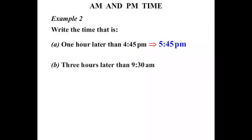What about three hours later than 9:30 AM? Well if we add three to 9:30, let's go up an hour at a time. So we start at 9:30, then we're getting 10:30, 11:30, 12:30. So certainly 12:30 is three hours later, but we've gone from AM to PM. We've gone past midday there.